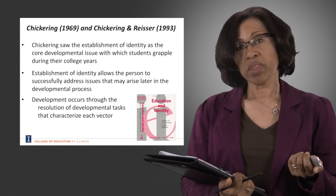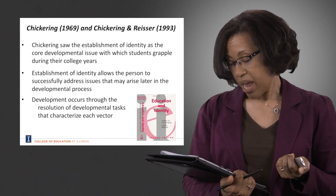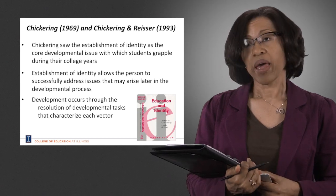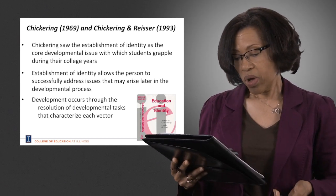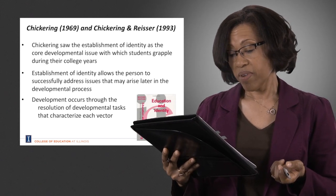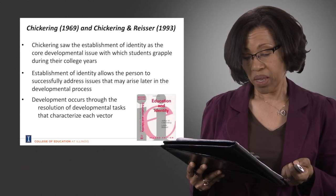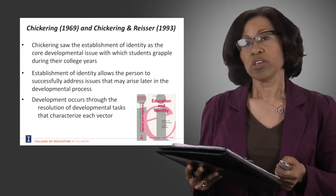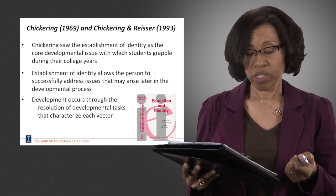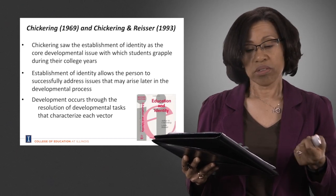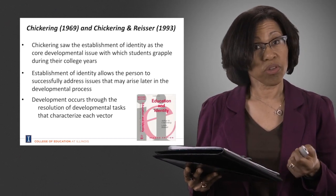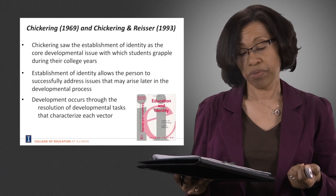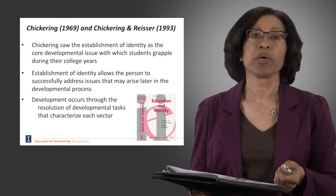These issues mainly involved developing competence, managing emotions, and other things that college students would be experiencing. These seven vectors actually form the student's identity. Chickering used the term vectors of development because they seem to have a direction and a magnitude, even though the progression is not necessarily linear. Students can move through these vectors at different times, may recycle back through and revisit an issue they've previously examined, and also move through these vectors at different rates.